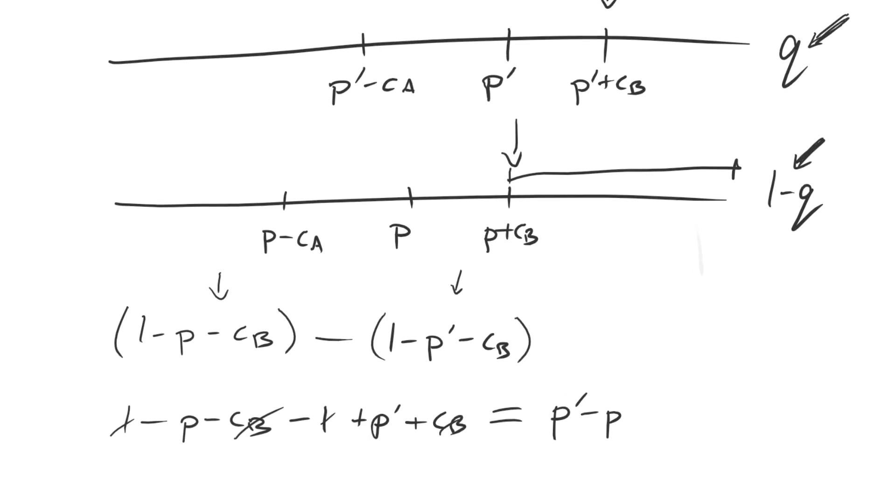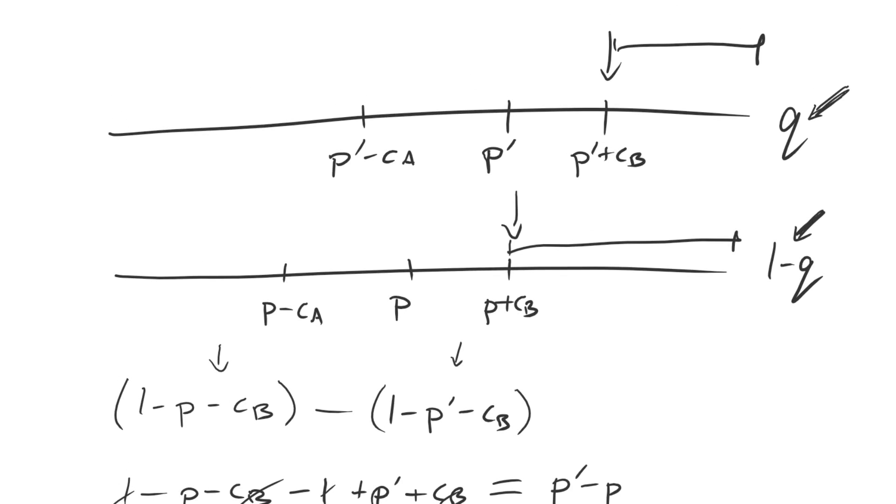So what that is measuring, if we go back up here and do a little bit of erasing to keep things clean, the peace premium is equal to the difference in how much A would be offering one type versus another type if it knew what the actual situation was. And that is measuring this quantity here. This quantity here is P prime minus P. That is the peace premium in this case.